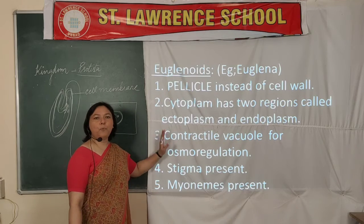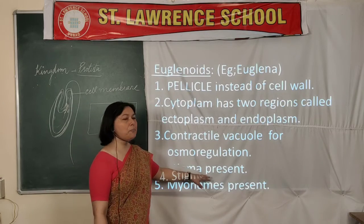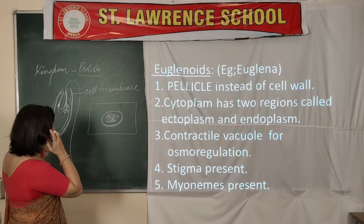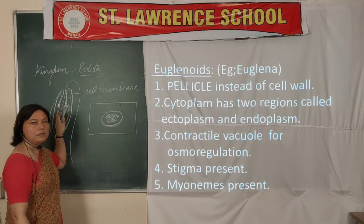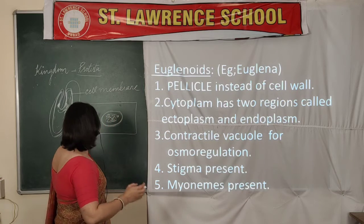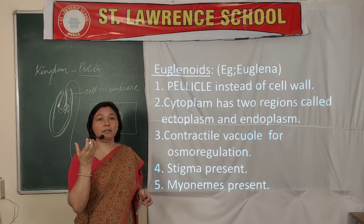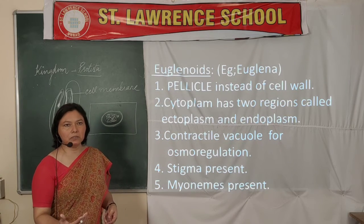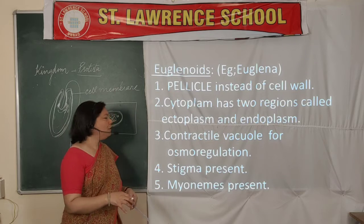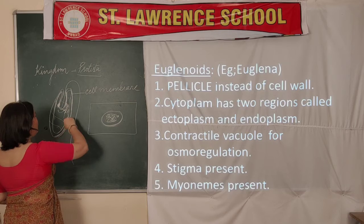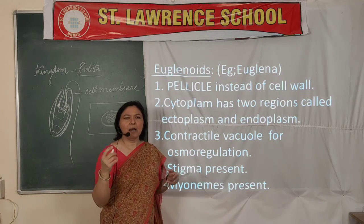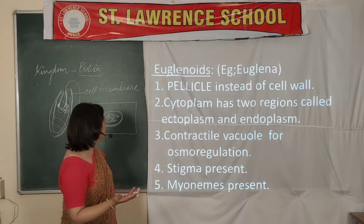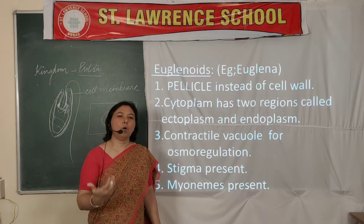There are more interesting points in Euglenoids. Fourth, stigma is present — a small spot located near the cavity that acts as the mouth. The stigma is photoreceptive, allowing the organism to absorb light. Fifth, myonemes are present. The word 'myo' relates to muscles; myonemes are very simple muscle fibers that entirely surround the cell body, covering it completely, and cause more flexibility to the organism for movement.